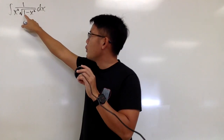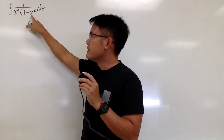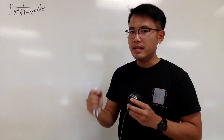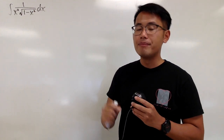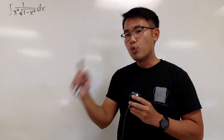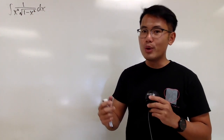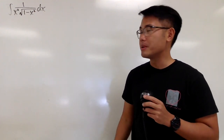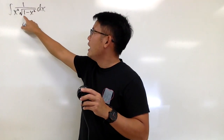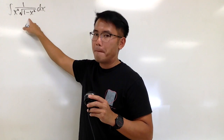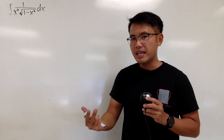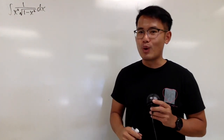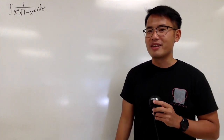Because inside we have 1 minus x squared, I'm going to use x equals sine theta, because 1 minus sine squared theta equals cosine squared theta. If we had x squared minus 1, I would use secant, because secant squared theta minus 1 is tangent squared theta.